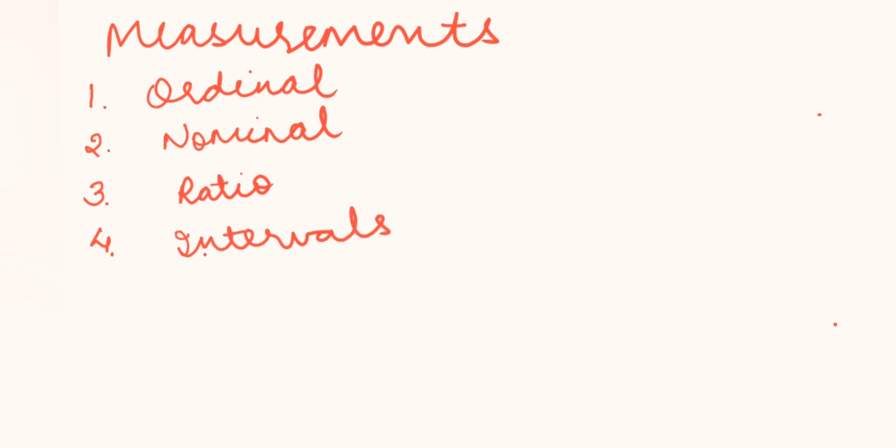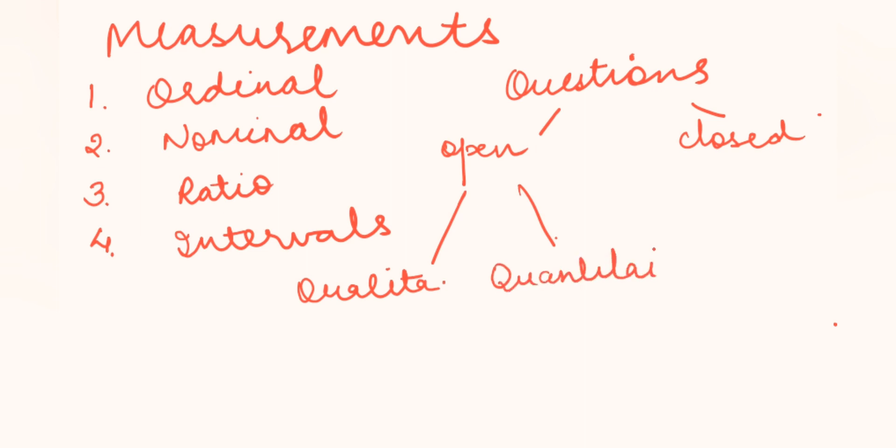Now we will be talking about what questions come, what kind of questions. It is categorized into two: open ended and closed ended. Open ended is classified into two: qualitative and quantitative. Closed ended includes MCQs and binary questions.